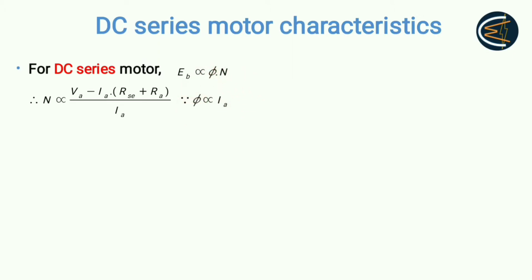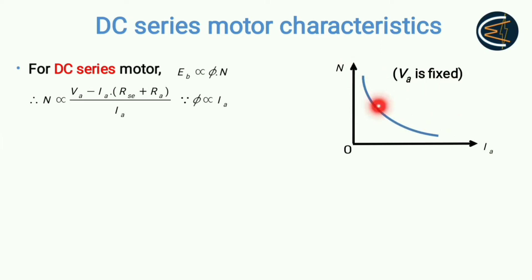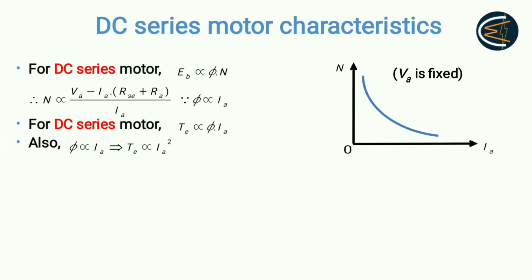From this relationship between speed and armature current, you get this kind of graph — a plot of N (speed) versus armature current, with VA constant. The nature of the curve is as shown. For the DC series motor, the electromagnetic torque is also directly proportional to flux times armature current.